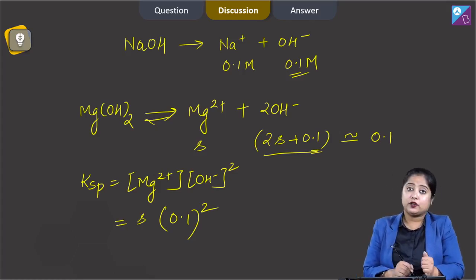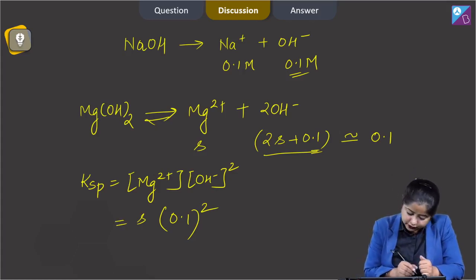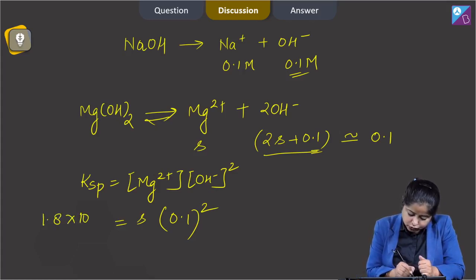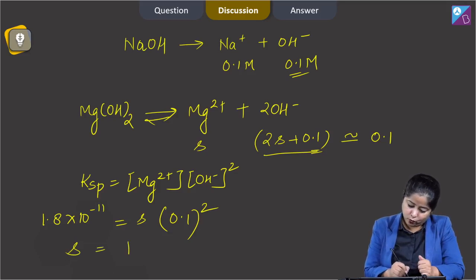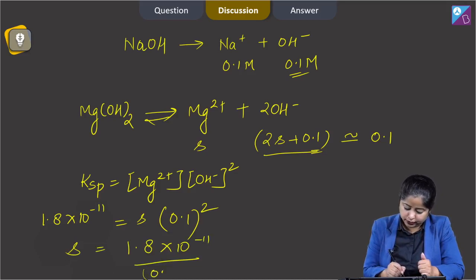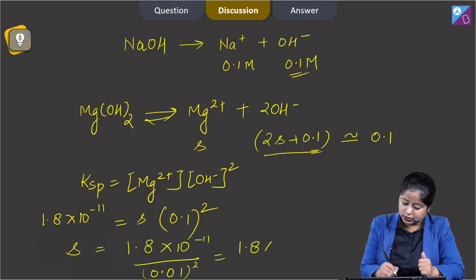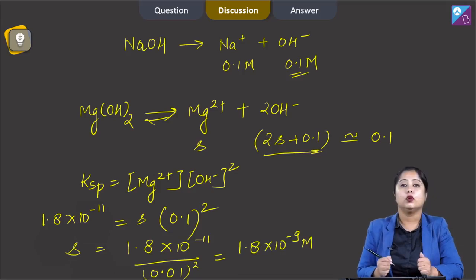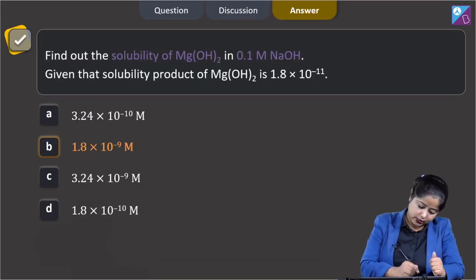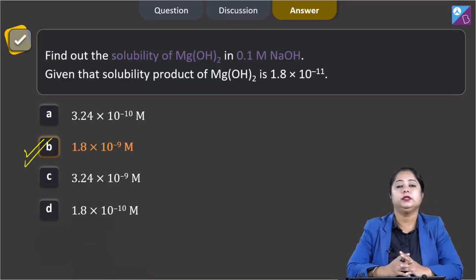Substituting the Ksp value: 1.8 × 10⁻¹¹ = S × (0.1)² = S × 0.01. Therefore, S = 1.8 × 10⁻¹¹ / 0.01 = 1.8 × 10⁻⁹ mol/L. The correct answer is option B.